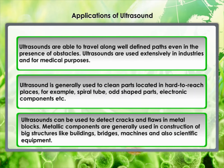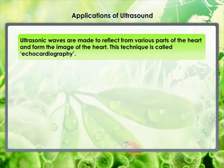Ultrasound can be used to detect cracks and flaws in metal blocks. Metallic components used in construction of big structures like buildings, bridges, machines and scientific equipment may have cracks or holes inside that are invisible from outside, reducing the strength of the structure. Ultrasonic waves are allowed to pass through the metal block and detectors are used to detect the transmitted waves. Ordinary sound of longer wavelengths cannot be used for this purpose, as it would bend around the corners of the defective location and enter the detector. Ultrasonic waves are also made to reflect from various parts of the heart to form an image — this technique is called echocardiography.